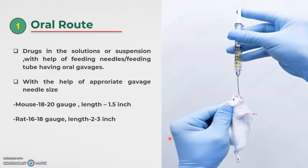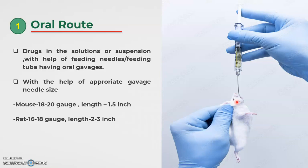In the enteral route, we can administer the dose in solution or suspension form with the help of feeding needles, tubes, or oral gavage. We choose the appropriate gavage size according to the animal, and with that gavage we can administer the dose orally. In this image you can see a mouse and the needle — with the help of that needle, we administer the dose to the animal. This is the oral route of administration.